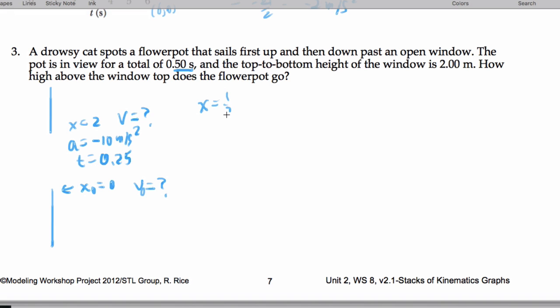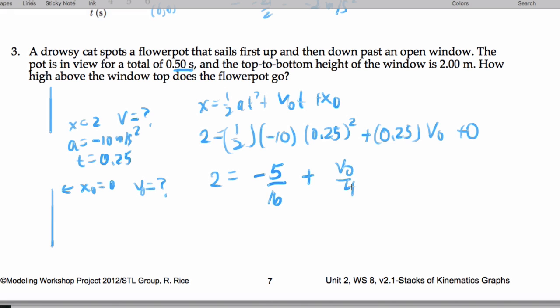So x is 1 half at squared plus v naught t plus x naught. So we have 2 is 1 half times negative 10 times 0.25 quantity squared plus 0.25 times v naught plus 0. Let's simplify a little bit further. So 2 is negative 5 over 16 plus v naught over 4.